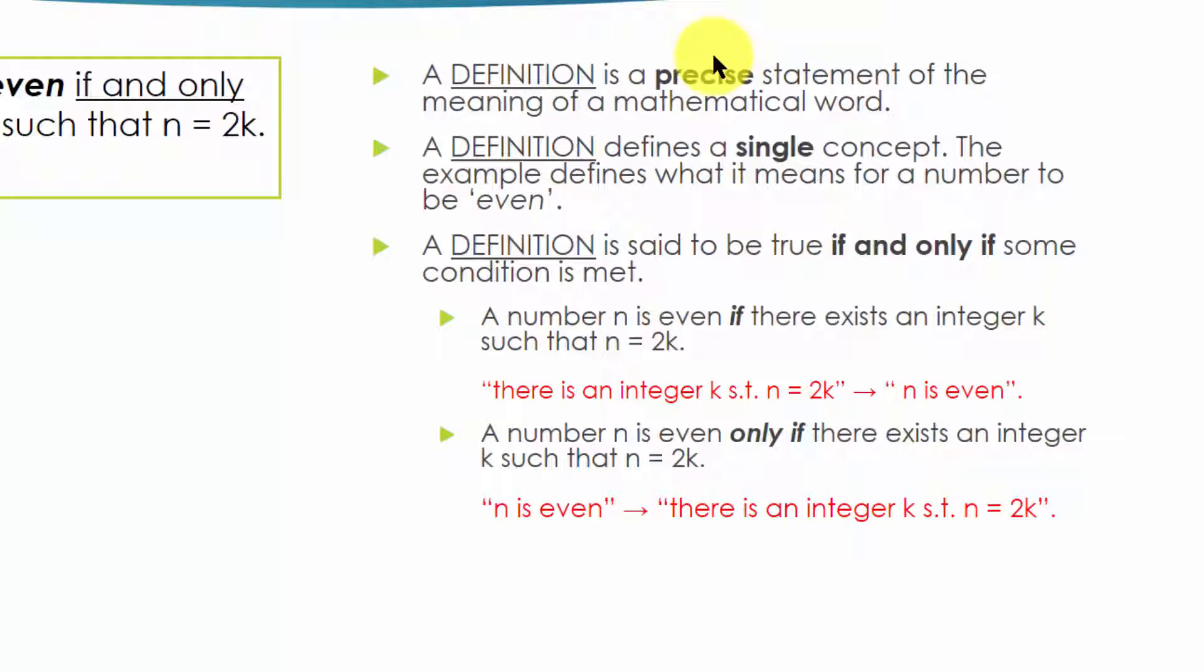Secondly, a definition is only about a single concept, a single term. The term here is even. It doesn't say anything about a number being odd or anything else. It is only about the concept of even.